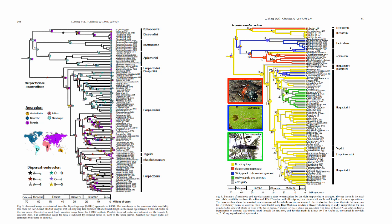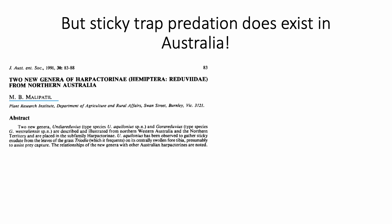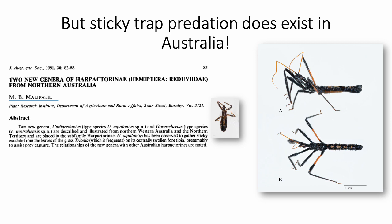In their global treatment, Zhang et al. showed two origins for resin gathering and even more for trichome use — pretty cool. Unfortunately, for those of us in Australia, the coverage of Australian taxa was limited and none of the Australian specimens used were of species known to use sticky trap predation. But we do know that sticky trap predation does exist in Australia. In 1991, Malik Malipatil described two monotypic genera: Enduriduvius with the species Enduriduvius aquilonius, and Goriduvius with the species Goriduvius westraliensis. In his paper, he briefly noted that Enduriduvius were observed gathering the sticky exudate from triodia, presumably to assist in prey capture.